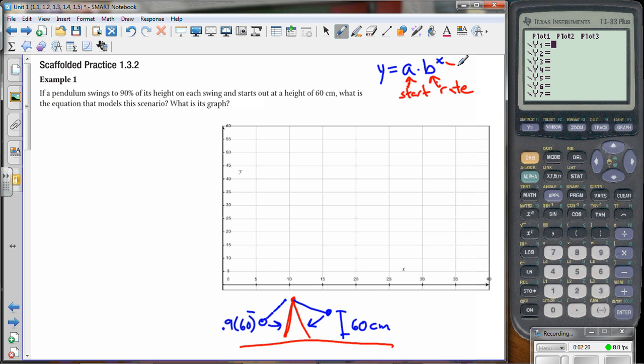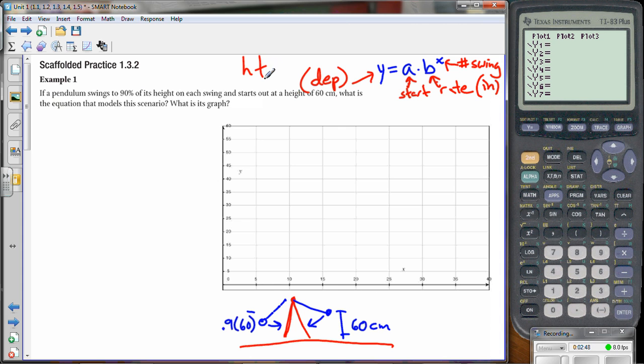And x is the number of swings. Now we talked before in this book about having independent and dependent variables. x is your independent variable because you control how many times it swings. What is dependent is the outcome, the y. So this is the dependent, and this is the height of the swing.